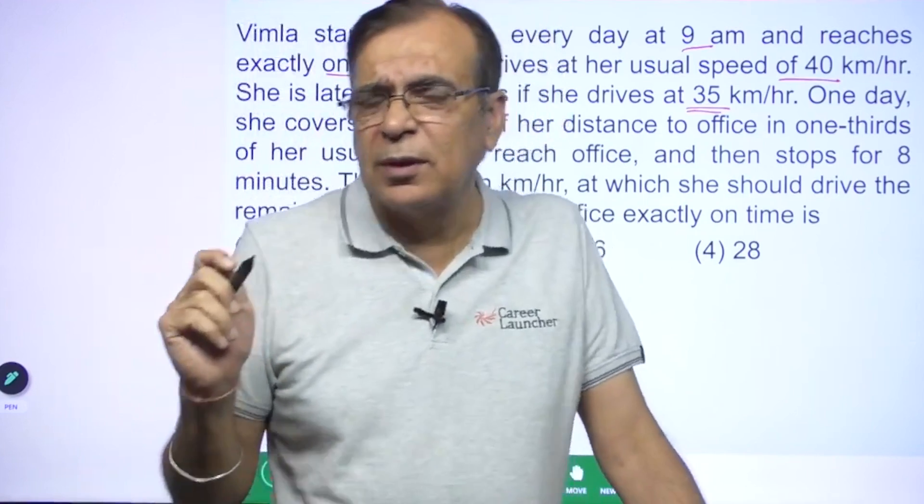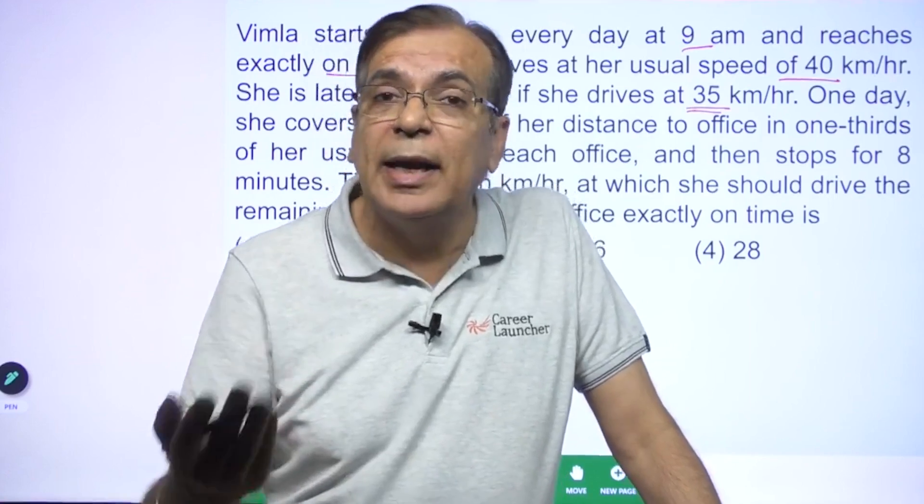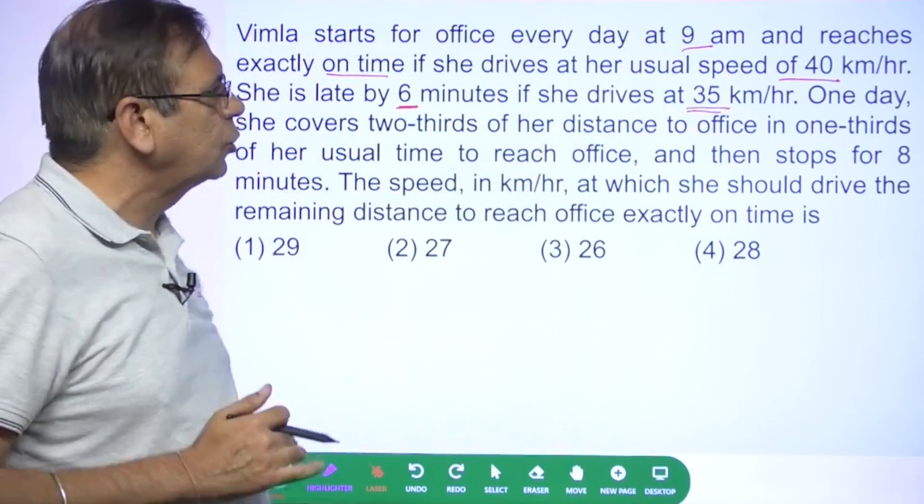Speed has become 35 by 40 or 7 by 8 times. That means the time taken should become 8 by 7. Straight away the ratio should come to you.